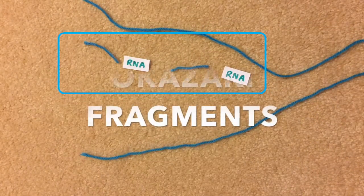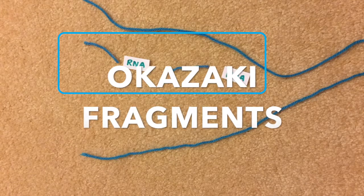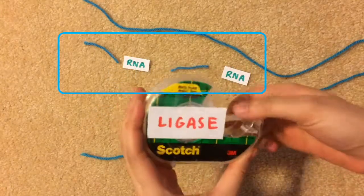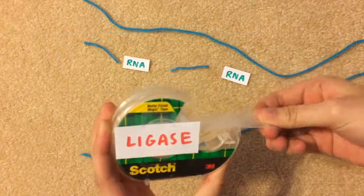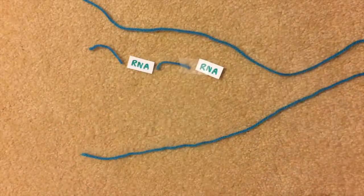Each of these broken strands are called Okazaki fragments. After the Okazaki fragments are made, they're sealed together into one continuous strand by the enzyme called ligase.